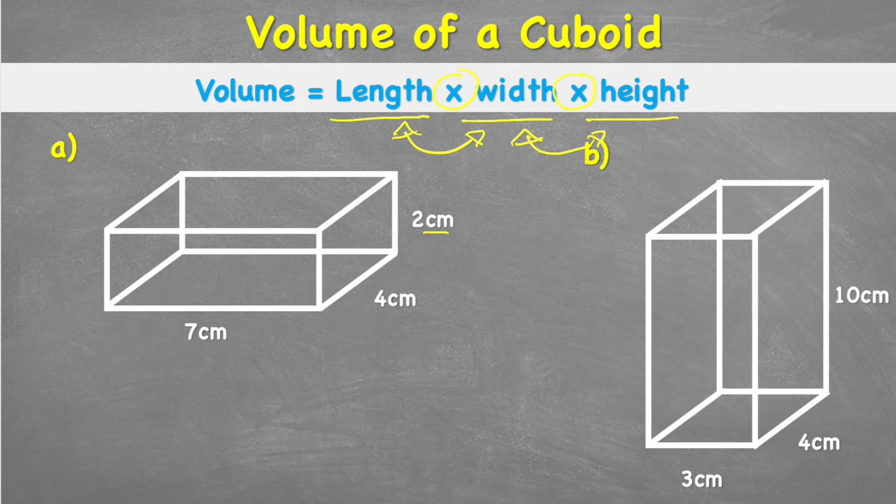OK, so let's jump straight into question one. Question one, we have this cuboid here with a length of seven centimetres, a width of four centimetres, and a height of two centimetres. So let's start with my formula. Volume equals length times width times height. Now I can input my numbers that I know. So I've got volume equals seven times four times two.